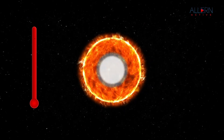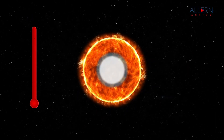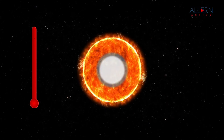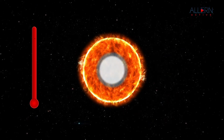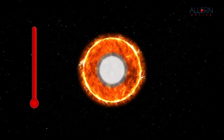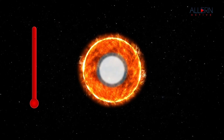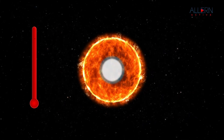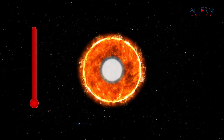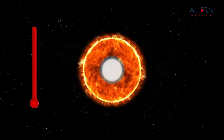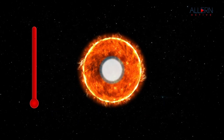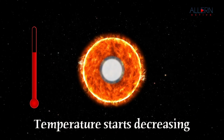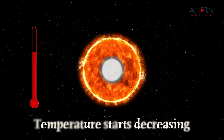For the temperature to remain constant, energy must be generated inside the star. This generation of energy occurs because of burning of fuel at the center of the star. The reason for the evolution of stars is the burning of fuel and therefore the decrease in the amount of fuel at their center. When the fuel at the center finishes, the energy generation stops, and the temperature of the star starts decreasing.